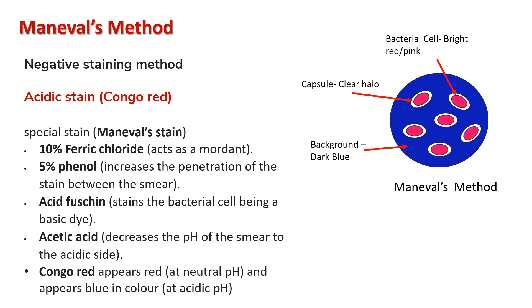After staining, the microscopic observation shows: the bacterial cell appears bright red/pink, the background appears dark blue in color, and the capsule appears as a clear halo.